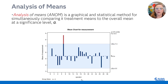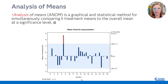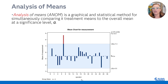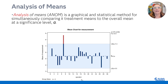Analysis of Means, or ANOM, is a graphical and statistical technique. It's primarily a graphical technique for simultaneously comparing lots of different treatment means to an overall grand mean at some specified significance level alpha. That ANOM process uses, instead of control limits, something called decision limits, based on your alpha, which by default would be 0.05. But that 0.05 is your experiment-wise alpha — it's accounting for how many comparisons you're making.